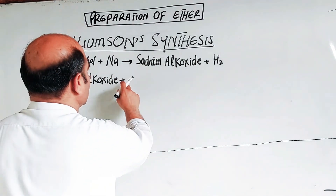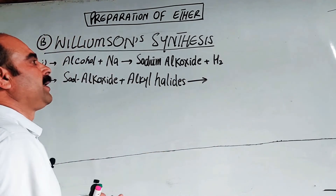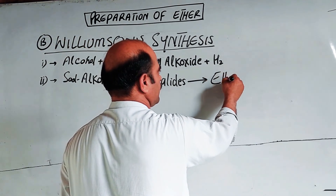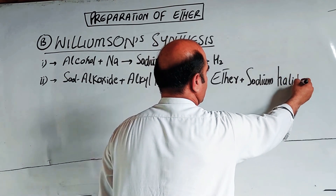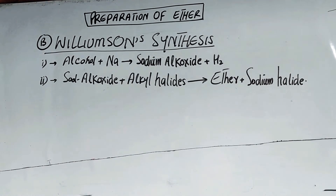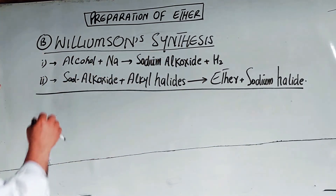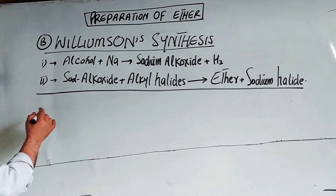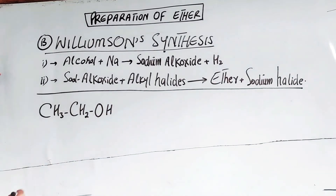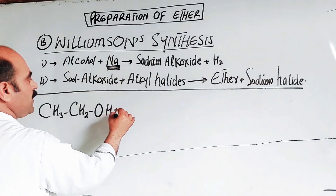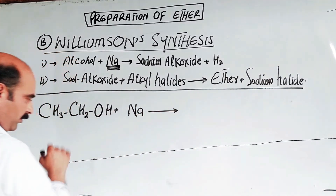Step number two: sodium alkoxide reacts with an alkyl halide to form an ether plus sodium halide. For the actual example, we take ethyl alcohol, CH₃CH₂OH. Sodium is more reactive than hydrogen, so it displaces hydrogen from the alcohol.